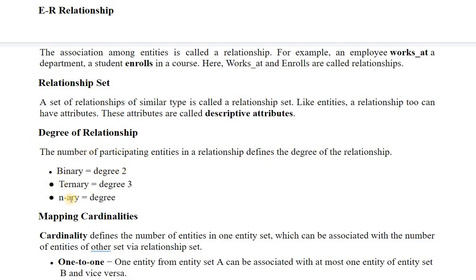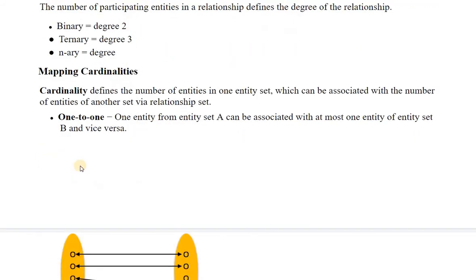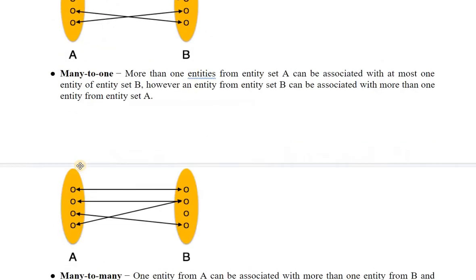The degree of a relationship can be binary, ternary, or n-ary. The number of participating entities in a relationship defines the degree: binary equals degree 2, ternary equals degree 3, and n-ary equals degree n, defining any number of relationships. Mapping cardinalities define the number of entities in one entity set that can be associated with the number of entities in another entity set via the relationship set. Cardinality depends on four types: one-to-one, one-to-many, many-to-one, and many-to-many.